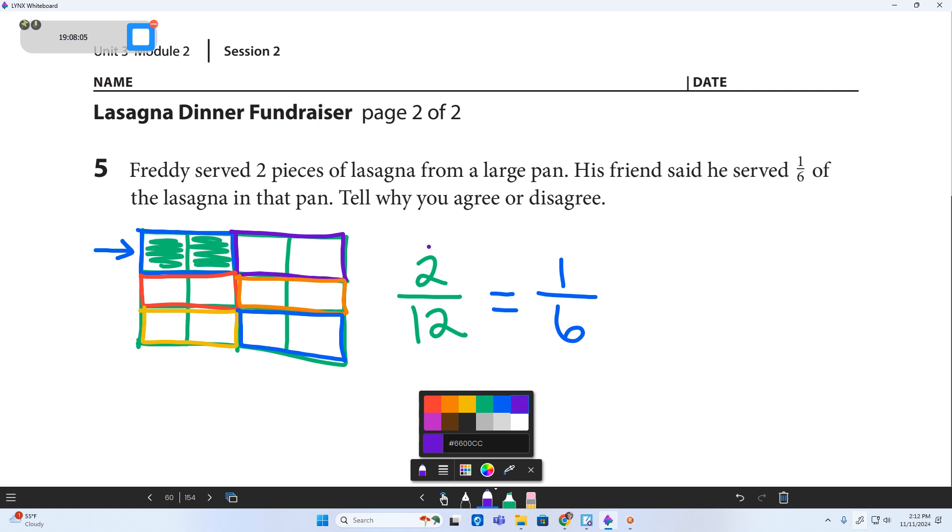Yeah. Two twelfths is the same thing as one sixth. And we're going to talk about this, but check it out. If you cut two in half, you get one. If you cut 12 in half, you get six. Yep. Alright. Moving on. Last one, I believe.